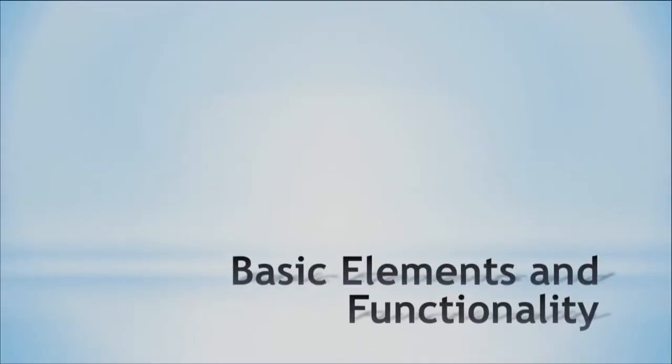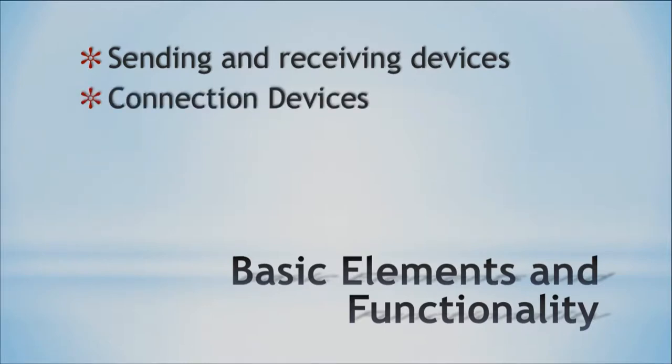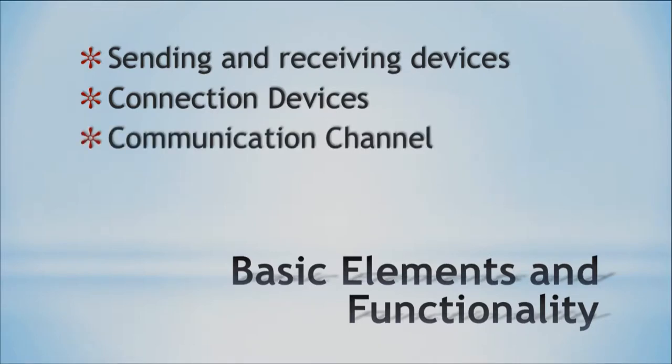There are some basic elements of a communication system. First, we have the sending and receiving devices — those are the ones we usually see. Then we have connection devices and a communication channel. Sending and receiving devices need to communicate in a certain agreed-upon way; otherwise everybody does things their own way and there's no communication. It's like speaking English — if we each had our own language, we couldn't understand each other. Connection devices are in the middle, acting like relays that help pass information from sender to receiver, hopping from one to the next until it arrives at the end.